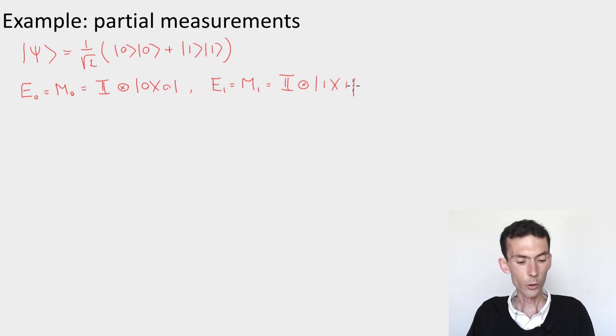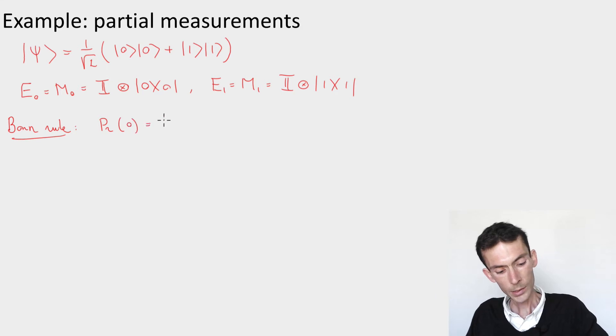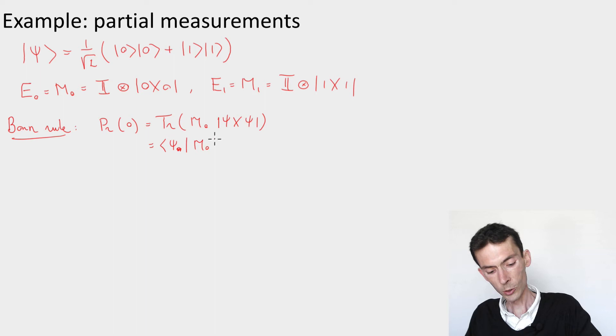Now let's see what the probabilities of the outcomes are. So the Born rule says that the probability that I obtain the outcome 0 is given by the trace of the product between M₀ and the density matrix associated with my state. Here I have a pure state, so the density matrix is simply the rank 1 projection on the pure state. Now this is equal to the overlap between the state ψ and my measurement operator M₀.